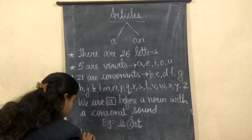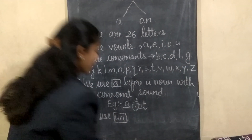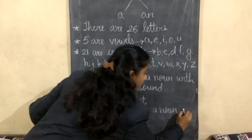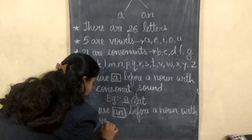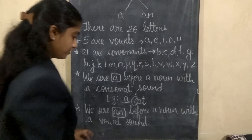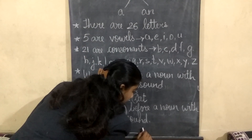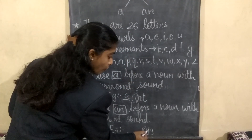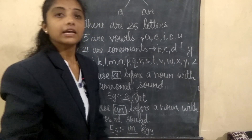The next: we use 'an'. We use 'an' before a noun with a vowel sound. For example: blank — egg. E-double-g, egg. Now you can see here, E is a vowel. This is a vowel. So what we write? 'An egg'. Is it clear children?